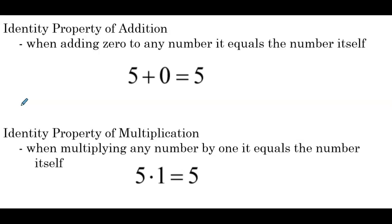The identity property of addition states that when adding 0 to any number, it equals the number itself. So 5 plus 0 is equal to 5. The identity property of multiplication states that when multiplying any number by 1, it equals the number itself. So 5 times 1 equals 5.